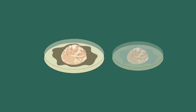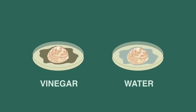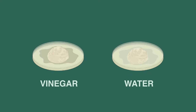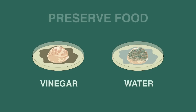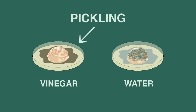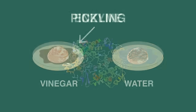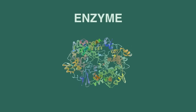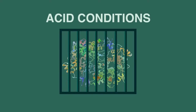Soak a slice of bread in vinegar and another in pure water, leave them open for a little while, and then leave them covered for a week. You will find that the bread soaked in vinegar has not gone mouldy, whereas the other bread has. In fact, we use vinegar to preserve food in a process called pickling. This is the case because certain enzymes which are vital for growth are unable to function in acid conditions.